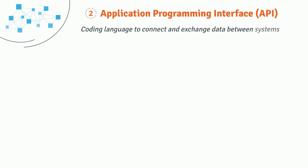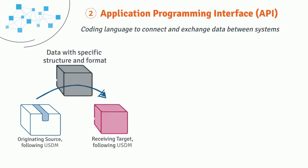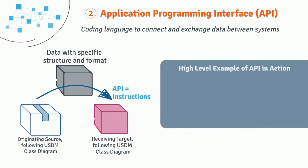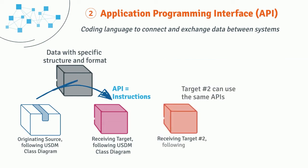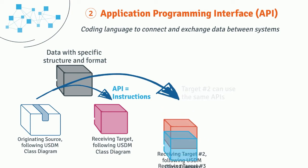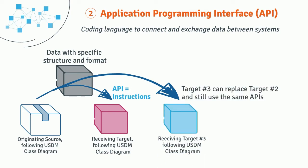APIs are coding constructs used to connect and exchange data between systems. APIs can be described as instructions on how data is expected to interact. By using both the USDM class diagram and API standards, you can use the same instructions across systems or when connecting to a new system.